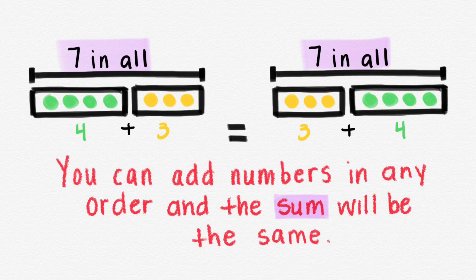For example we have 4 plus 3 on one side equals 7, on the other side we have 3 plus 4 and it still equals 7.